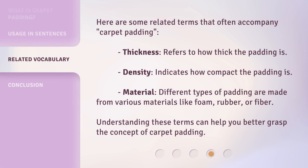Here are some related terms that often accompany carpet padding. Thickness refers to how thick the padding is. Density indicates how compact the padding is. Material — different types of padding are made from various materials like foam, rubber, or fiber.